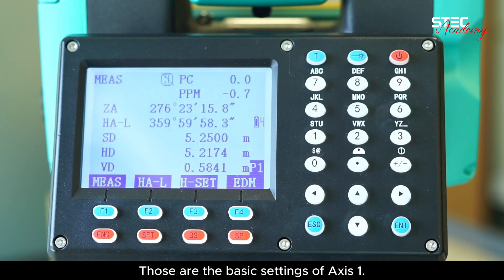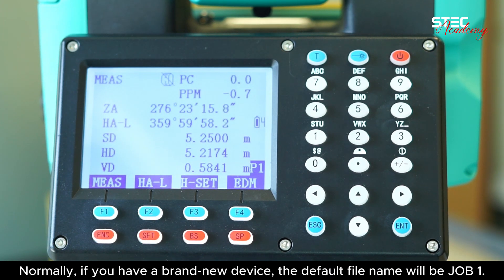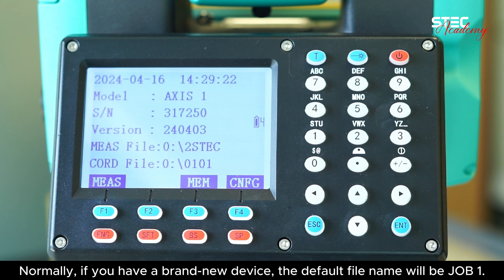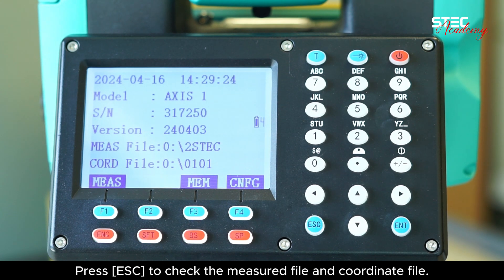Those are the basic settings of AXIS 1. Normally, if you have a brand new device, the default file name will be Job1. Press ESC to check the measured file and coordinate file.